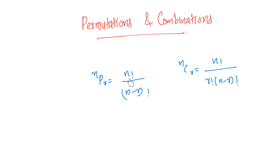NPR is equal to N factorial by N minus R factorial. NCR is equal to N factorial by R factorial into N minus R factorial. We don't need to solve these two equations directly.